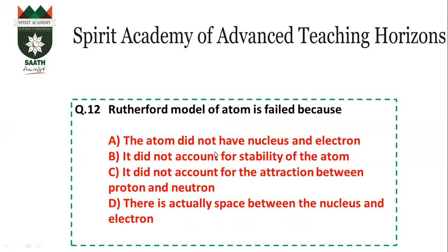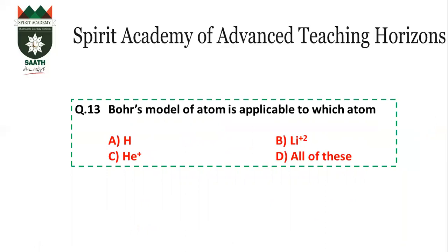Question number 11: Rutherford's model did not account for the stability of which atom? If you read the statement carefully, it says 'atom.' Among the given options, only hydrogen is an atom — helium and lithium ions are not atoms. So the answer is A (hydrogen).